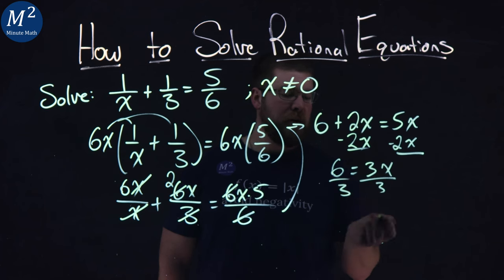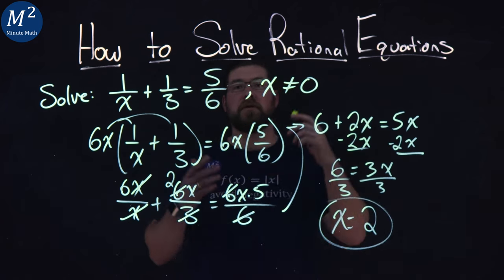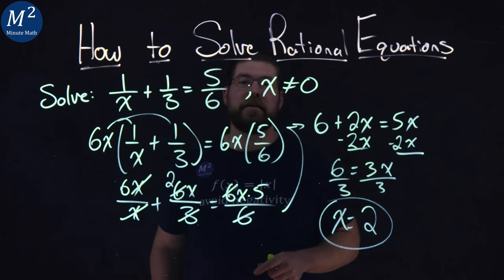Divide both sides by 3. Flip it around. You should be able to see that. 6 divided by 3 is 2. And there we have it. Our solution to our equation here, our rational equation, is just x equals 2.